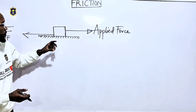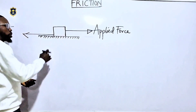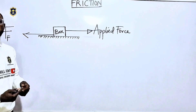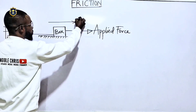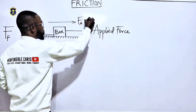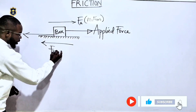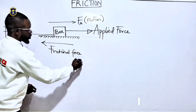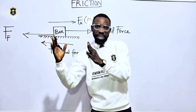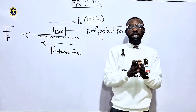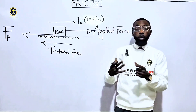Frictional force acts at the surface of separation between two bodies in contact. We have our horizontal surface and a box on it. It tends to oppose the motion of one body over the other — so if the box is going in one direction, the frictional force opposes it in the opposite direction, acting as a counterbalance to the direction of motion.